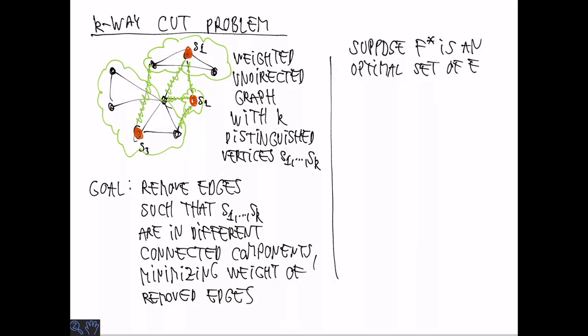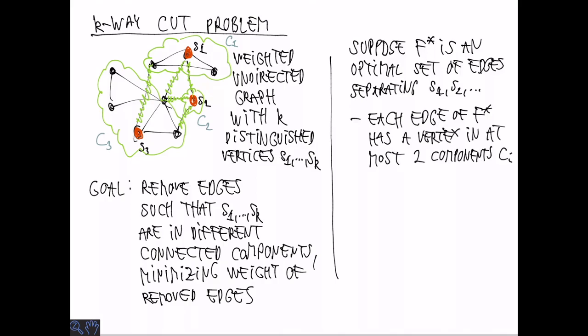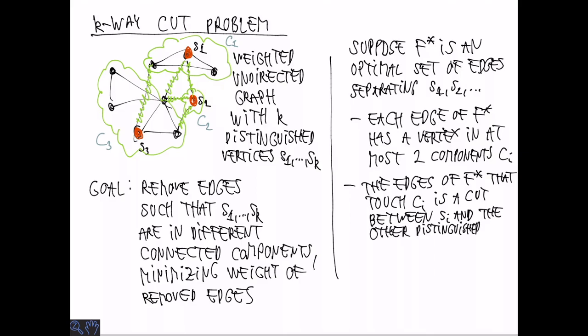Suppose that F-star is an optimal solution to the k-way cut problem, separating S1 through SK. Look at the corresponding connected components for each distinguished vertex. Each edge of F-star has at most two vertices, so it can touch at most two components. The edges of F-star that touch a particular component CI is a cut between SI and the other distinguished vertices.